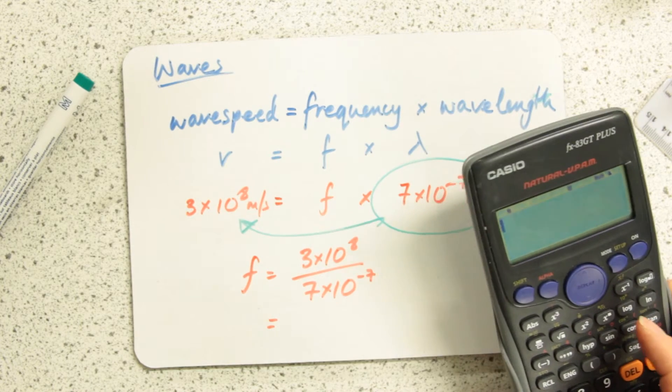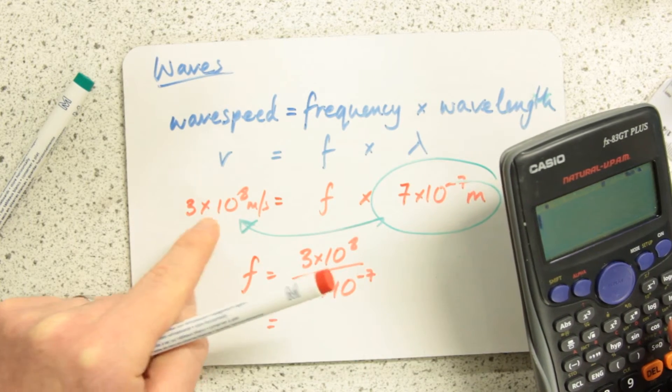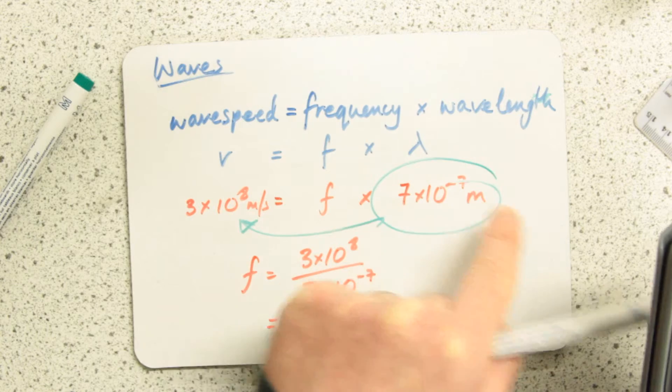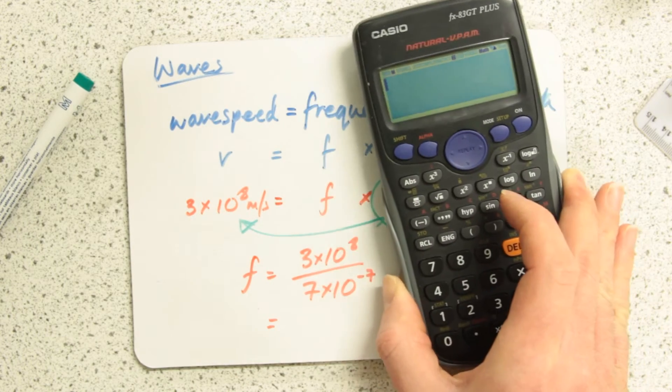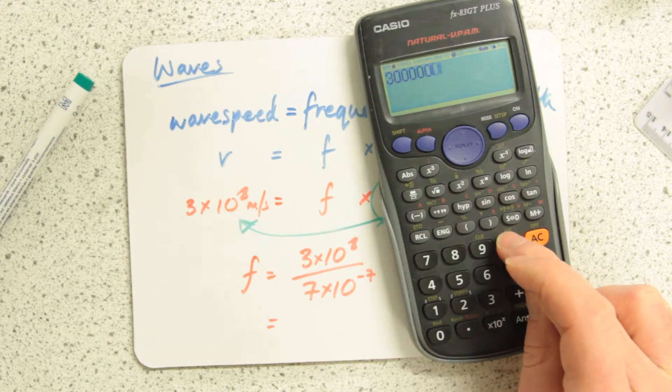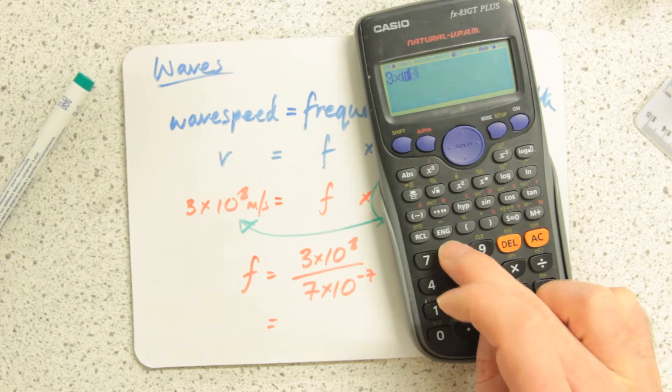That's quite tricky. I know from maths that's 3 and then 8 zeros, and that's 7, 1, 0, a point and then 6 more zeros then 7. I can use standard form in my calculator as a shortcut. I don't have to write all the zeros where I could easily make a mistake. I use my times 10 to the button, times 10 to the 8, divided by 7 times 10 to the minus 7.